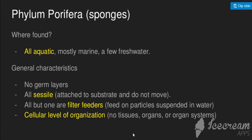Phylum Porifera are basically sponges. They are aquatic in nature, mostly marine, and some are freshwater. They don't have any germ layer — neither endoderm, ectoderm, nor mesoderm. They are sessile, meaning they attach to a substratum. All but one are filter feeders — water with suspended food particles is filtered for nutrition. They have a cell level of organization, not tissue or organ level.